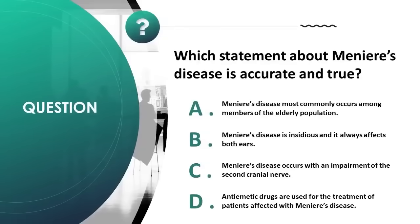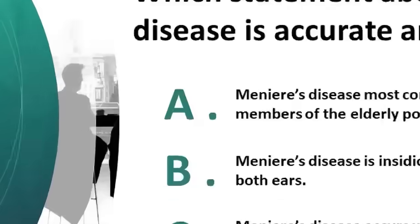Which statement about Ménière's disease is accurate? A) most commonly occurs among the elderly, B) insidious and always affects both ears, C) occurs with impairment of the second cranial nerve, D) antiemetic drugs are used for treatment. Correct answer is D.